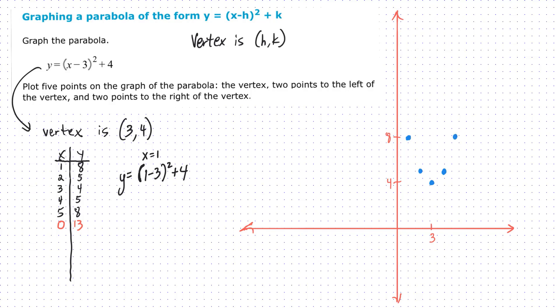Now when x is zero, we get our y-intercept. So nine, 10, 11, 12. Here's 12. And then here's 13. Boom, right there.